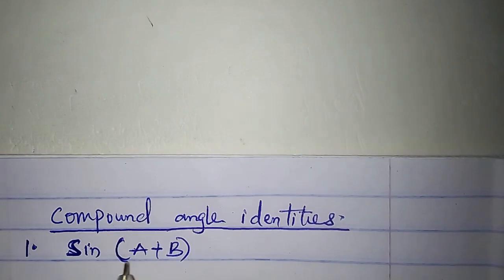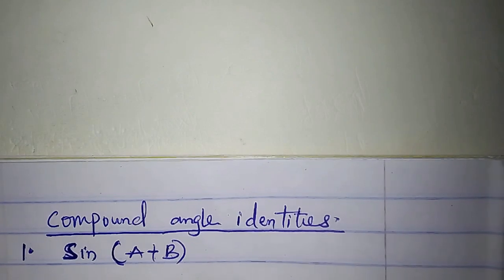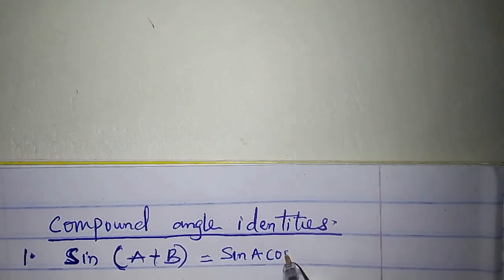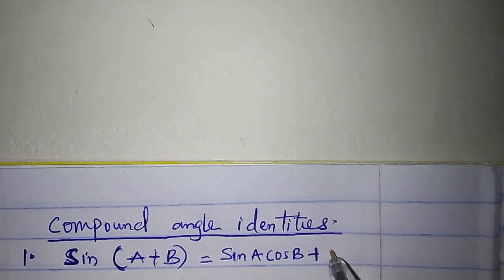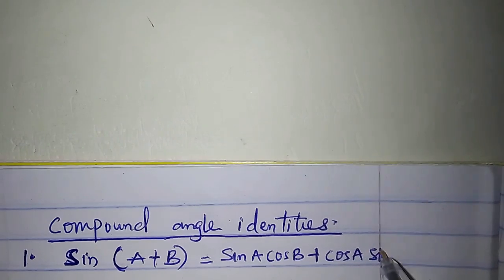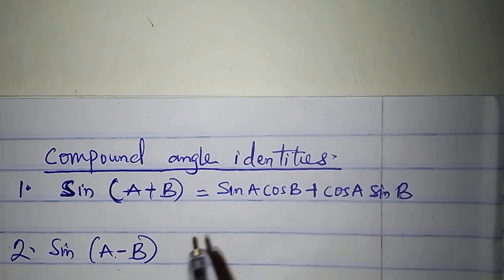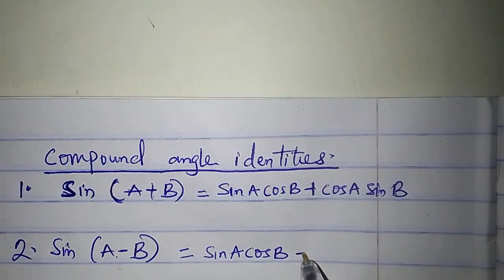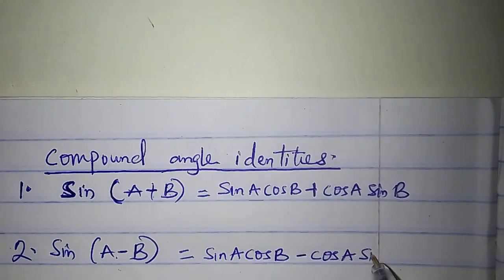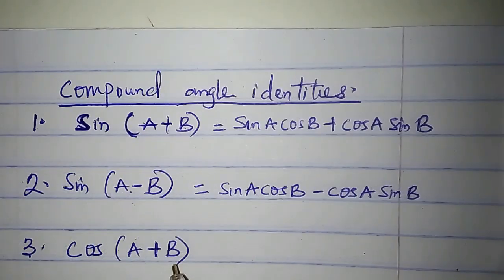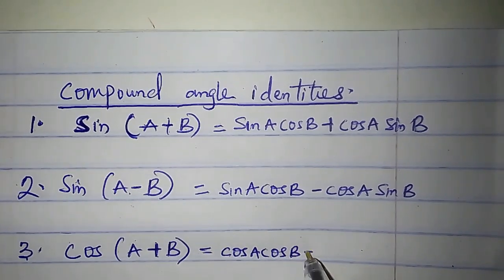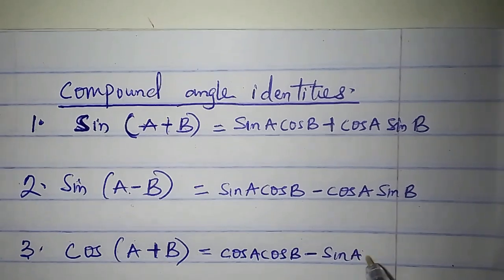What is sine A plus B? A plus B is a sum, and here we have the sine of a sum. The identity says: sine(A+B) is equal to sin A cos B plus cos A sin B. Sine(A−B) is sin A cos B minus cos A sin B. Cos(A+B) is cos A cos B minus sin A sin B.